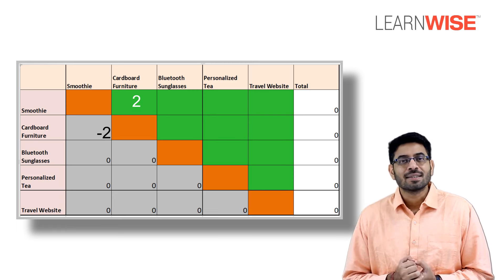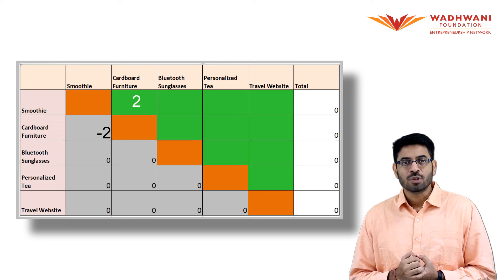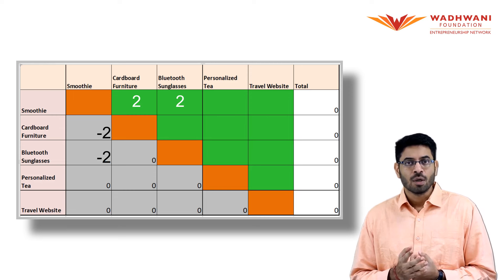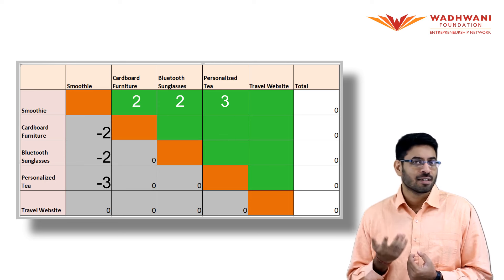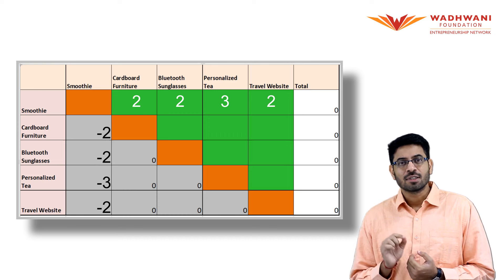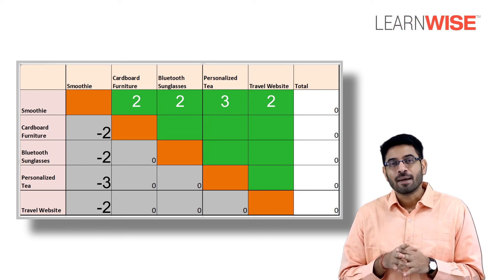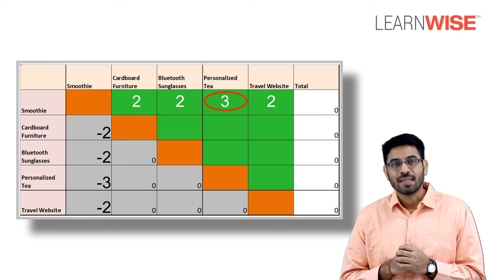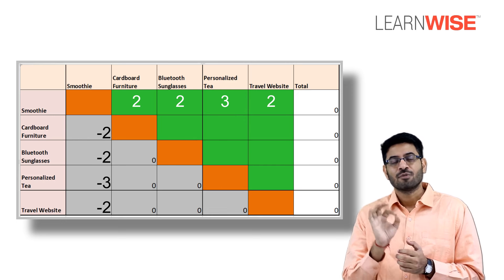The smoothie idea is then compared to the other ideas listed in the vertical column. When compared to the Bluetooth idea it is again given a score of two. When compared to the personalized tea idea it is scored three, as the smoothie idea is significantly better than the personalized tea. When compared to the travel website it is given a score of two. Note that the grey boxes represent the score of the other idea in the pair — so the personalized tea automatically receives a minus three.